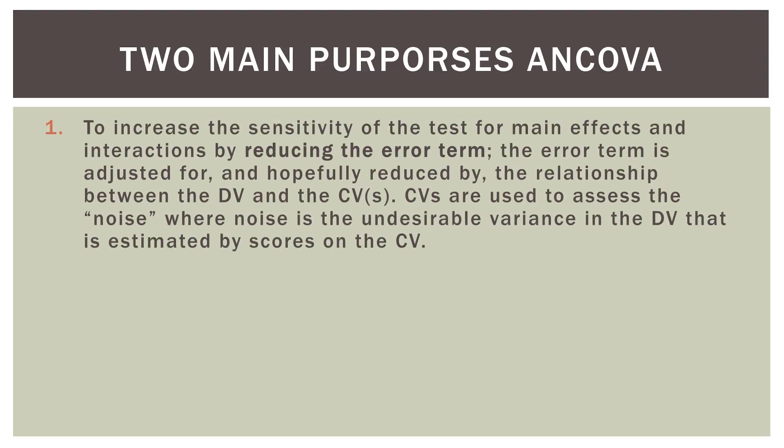A quick reminder of the two main purposes of ANCOVA. Number one: to increase the sensitivity of the test for the main effects and interactions by reducing the error term. The error term is adjusted for, and hopefully reduced by, the relationship between the dependent variable and the covariate or covariates. The covariates are used to assess the noise — the undesirable variance in the dependent variable that is estimated by the scores on the covariate. One of the purposes of ANCOVA is to reduce the error term.